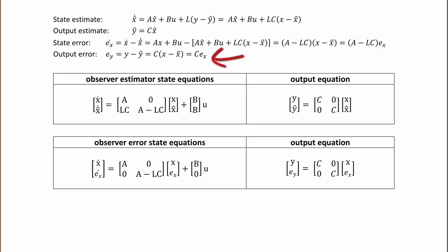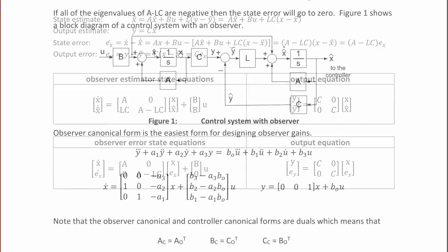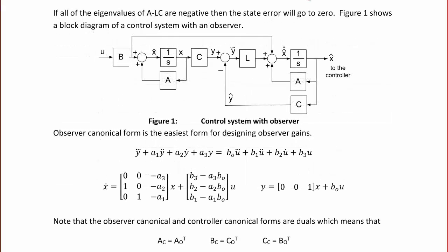The output error e_y equals y minus y-hat, which equals C times (x minus x-hat), which equals C times the error. We can write these equations in matrix form as the observer estimator state equations, the output equations, the observer error state equations, and the output equations. If all of the eigenvalues of (A minus L*C) are negative, then the state error will go to zero.